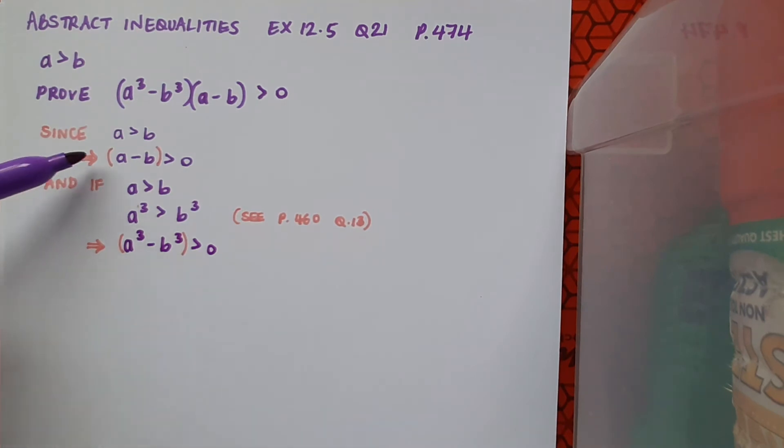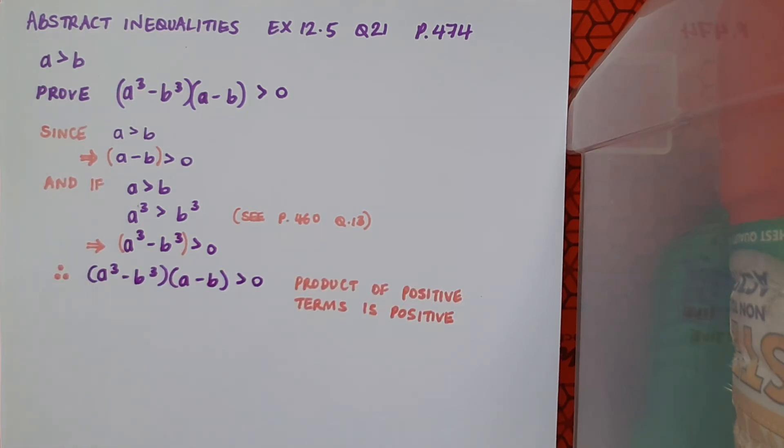Now I know that if I have two positive numbers and I get their product, it must be a positive number. So on the basis of a minus b being positive and a cubed minus b cubed being positive, I can definitely say that a cubed minus b cubed times a minus b is also positive. And I'm just giving my reason there to back myself up. The product of positive terms is positive. And of course, in this question, we're operating in the real world universe, in the real number universe, because they've said that a and b are elements of R.